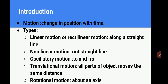So we will start with the Introduction. Motion — once again we have to understand what is motion. When an object changes its position with time, it is said to be that the object is in motion.